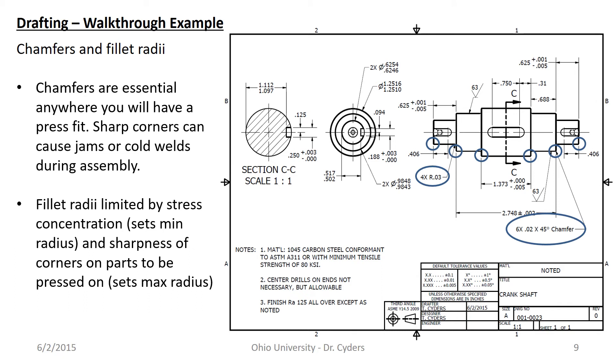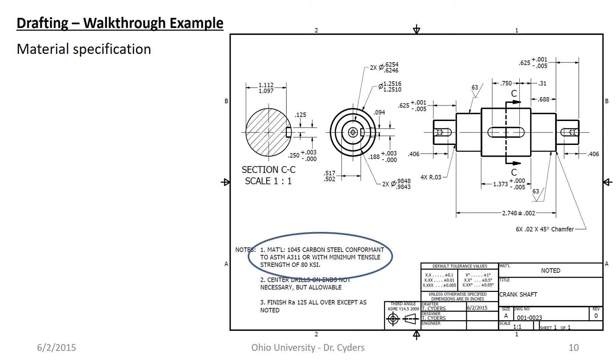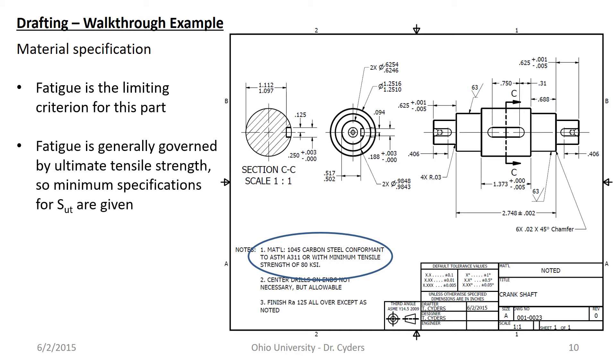We also look at the material spec here. I need to know what I'm going to make this out of. In this case I've specified that it's 1045 carbon steel. Fatigue is the limiting criterion for this part design as you've probably found in your analysis. The fatigue stresses can actually get pretty significant and it's generally governed by ultimate tensile strength. So minimum specifications for ultimate tensile strength are given. In this case I know that there is a spec ASTM A311 that many companies who make 1045 carbon steel will pursue conformance with. ASTM A311 has a specification for ultimate tensile strength in there. So if I buy 1045 carbon steel that says it's conformed to ASTM A311, I know I'm going to get a minimum ultimate tensile strength from that.